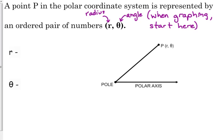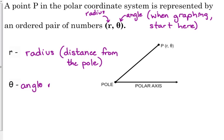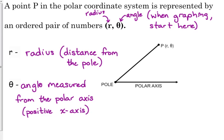So again, r is your radius or the distance from the pole. Theta is your angle, theta is your angle measured from the polar axis, which is the same as the positive x-axis.